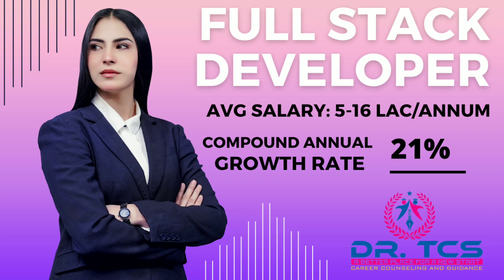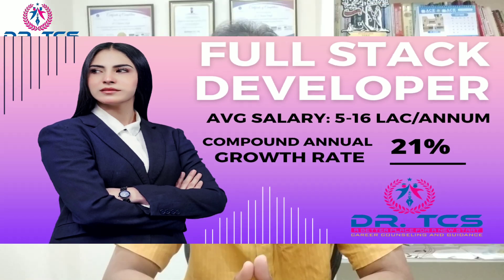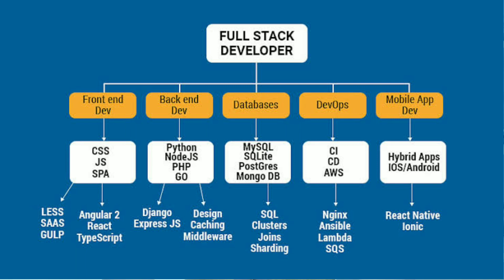As a Full Stack Developer, your job roles include front-end developer, back-end developer, database analyst, architecture, DevOps, and mobile app development — covering the whole software industry. Key skills include CSS, JS, SPA, Python, and PHP; databases like MySQL and SQLite; CI/CD pipelines; AWS; hybrid apps; and Android development.